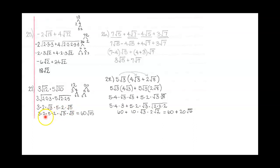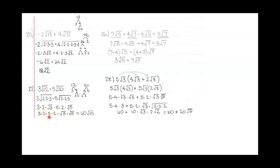So I'm going to put everything outside the radical together: 3 times 2 times 5 times 2. And everything still under the radical — square root of 3 and square root of 5 — I'll put those together. So 3 times 2 is 6, times 5 is 30, times 2 is 60, and square root of 3 times square root of 5 is square root of 15. So the answer is 60 square roots of 15.